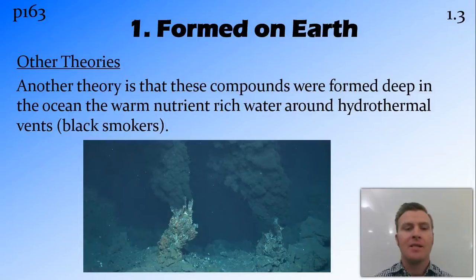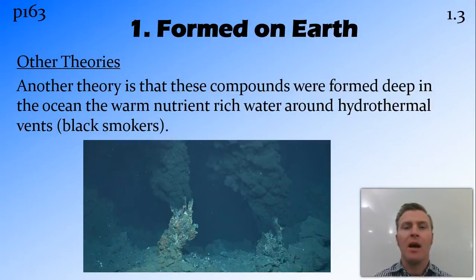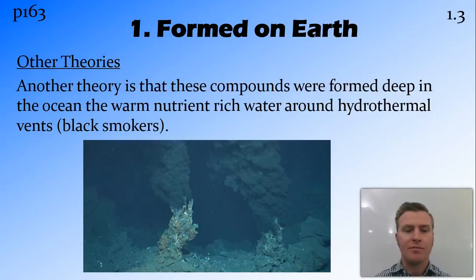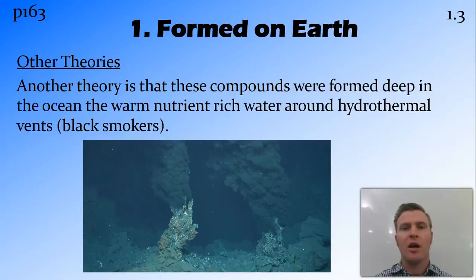Another theory is that these organic chemical compounds were formed deep in the ocean around the hydrothermal vents, or black smokers. These black smokers release hot water that has been dissolved through the rock and in the magma at the bottom of the ocean, releasing it back into the ocean with a whole heap of dissolved nutrients from those rocks. A bit further away from the actual smoker itself — but not so far that it's freezing cold — there is an area where these sorts of chemical reactions can happen with the nutrient-rich water to produce organic compounds.